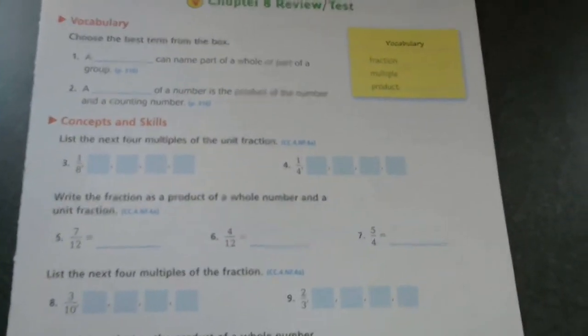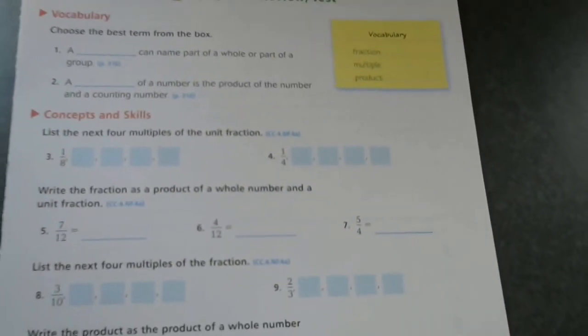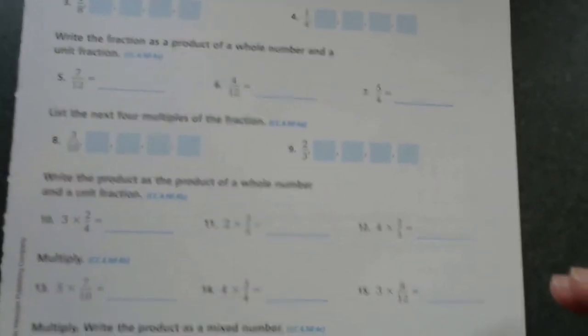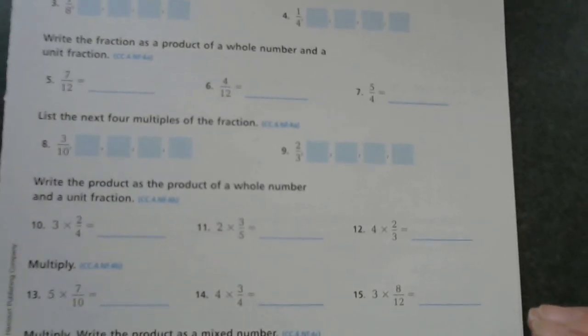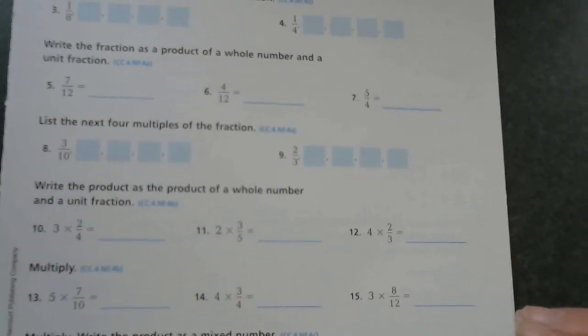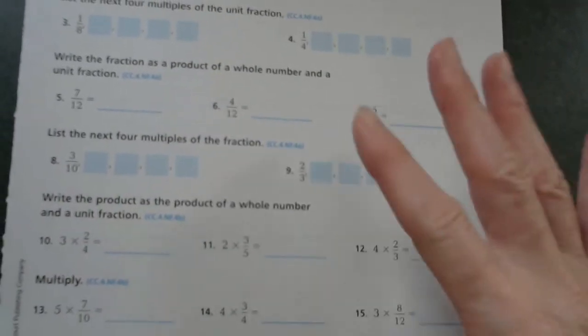I just want to caution you that if you're not sure on how to do some of this, make sure you look back in your big book. There were only five lessons in this chapter, so it will be easy to find exactly how to do some of these if you're confused.